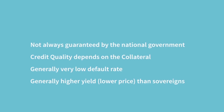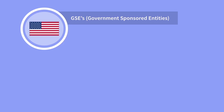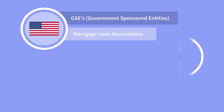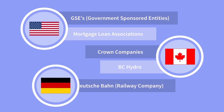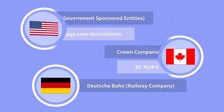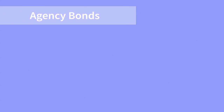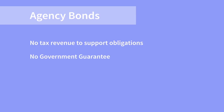Quasi-government bonds are also known as agency bonds. In the US, these bonds are issued by government-sponsored entities or GSEs. Issuers would include the mortgage associations of Fannie Mae and Freddie Mac. In Canada, they are called crown companies — BC Hydro, Hydro Quebec, Canada Post, etc. In Germany, the railway network Deutsche Bahn is fully controlled by the German government. In the case of agency bonds, there is no tax revenue to support cash flows and there is usually no government guarantee. It is the operations or a project under their control which determines their ability to repay.